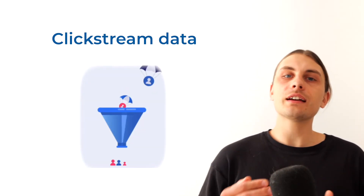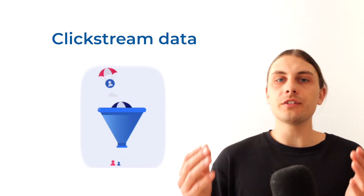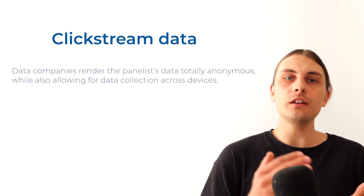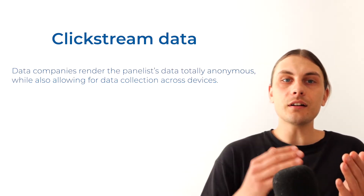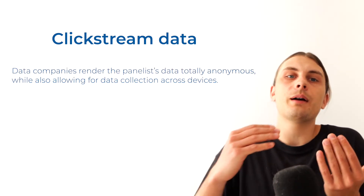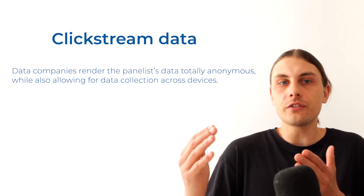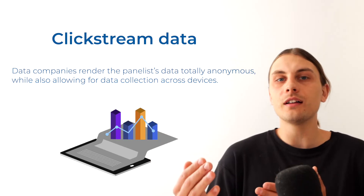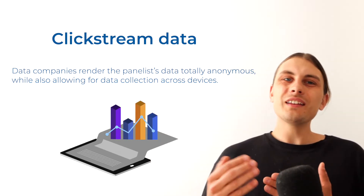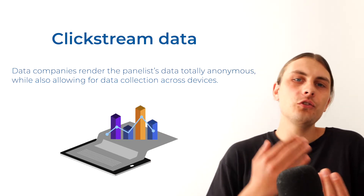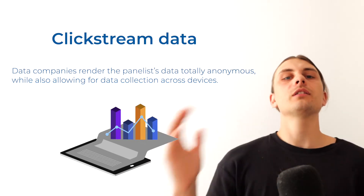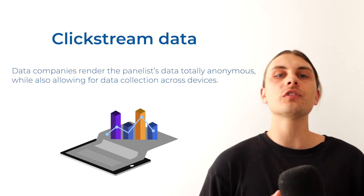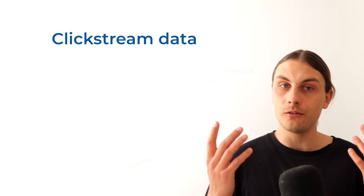Data companies collect clickstream data from millions of internet users who agree to share the data. These users are known in the industry as panelists. Data companies identify panelists using panelists' hashed IDs, which renders the panelists' data totally anonymous, while also allowing for data collection across devices. While a single user's clickstream data might not be useful, when you aggregate data from millions and millions of users, you can begin to uncover trends and draw conclusions about different metrics mentioned above.